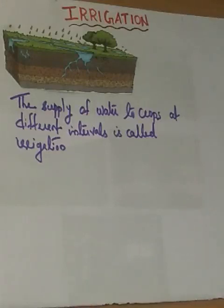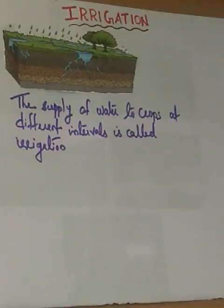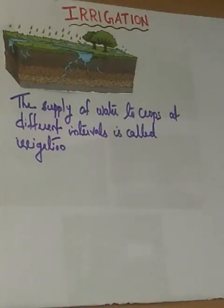When roots absorb water that contains dissolved minerals and fertilizers, it reaches the different parts of the plant. Water also protects the crop from both frost and hot air currents. So to provide all these benefits, we have to water the plants regularly.